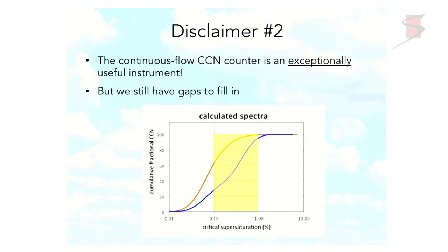This is time for my second disclaimer. Our group has done a lot of work with the new continuous flow CCN counter. It's been an exceptionally useful instrument, deployed all over the world. Very importantly, people are getting data that is calibrated and taken the same way so we can intercompare CCN. But it does have a limited range over which it gives us data, so we can understand variability between these two very different types of CCN spectra, but we don't have good constraints either for very weakly forced clouds or what happens in stronger convection.